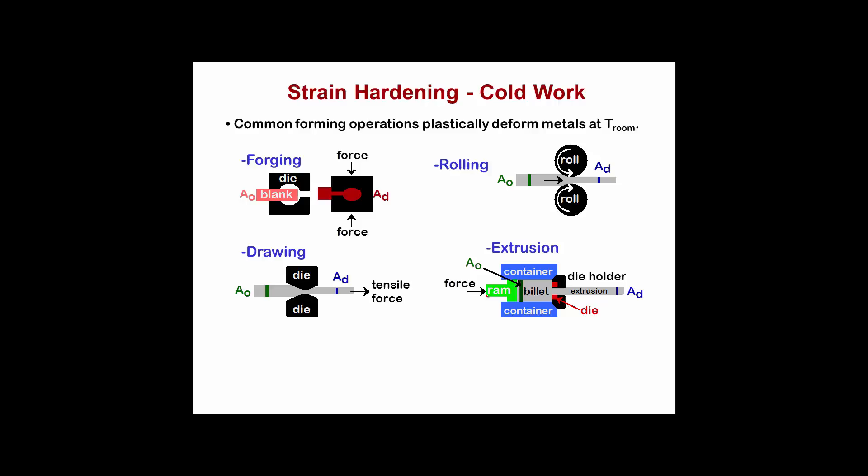We call this cold work because it is done at a relatively moderate temperature. What it means is that in any of these processes, we're plastically deforming the metal in such a way that we generate dislocations and entangle those dislocations as they move and thereby cause strain hardening.